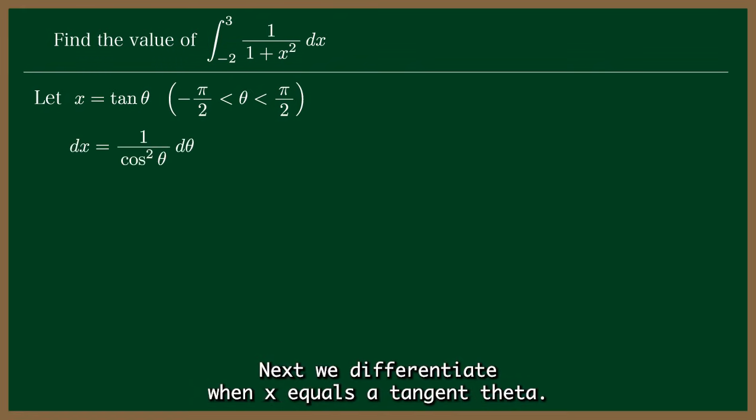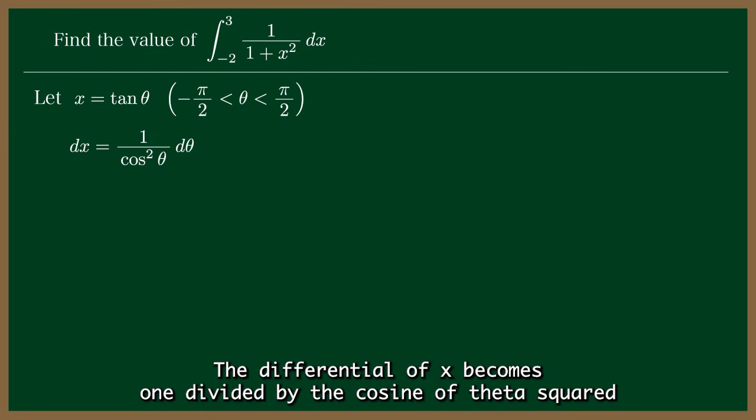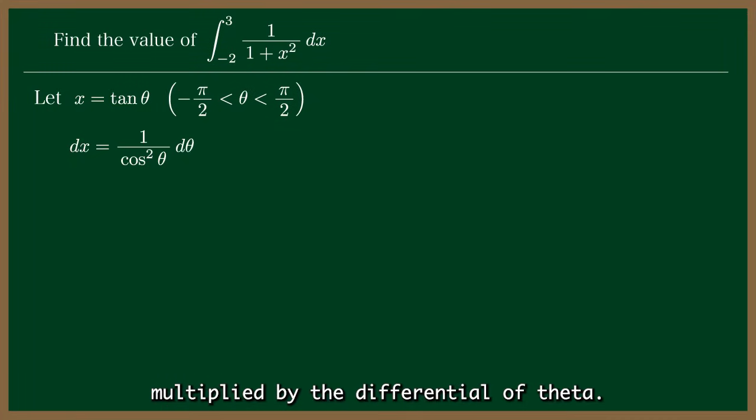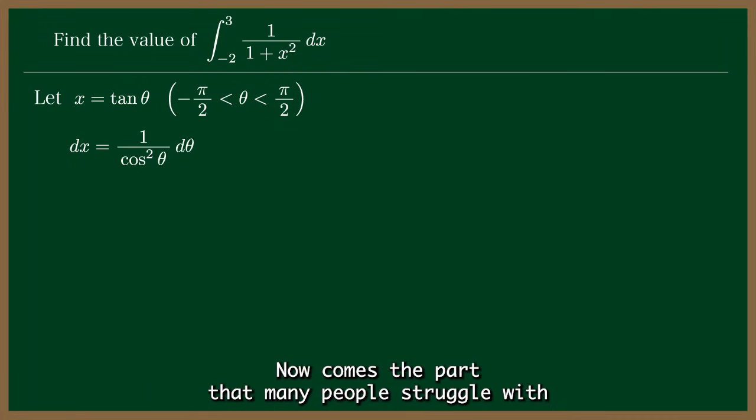Next, we differentiate. When x equals the tangent of theta, the differential of x becomes 1 divided by the cosine of theta squared, multiplied by the differential of theta.